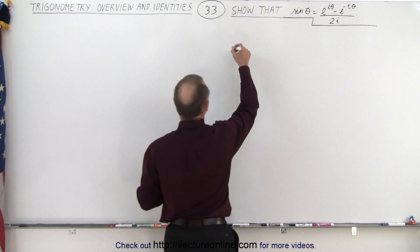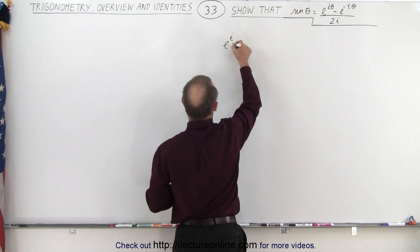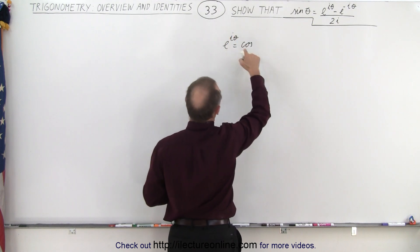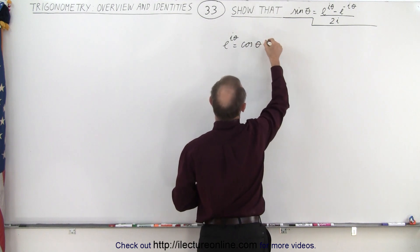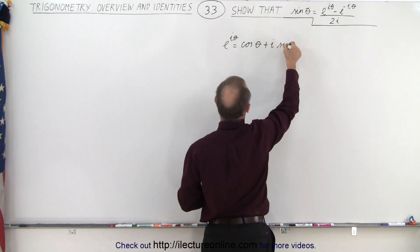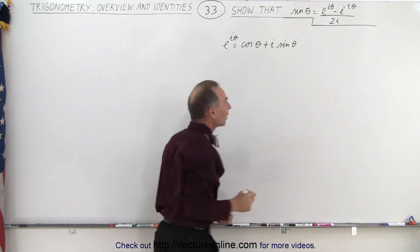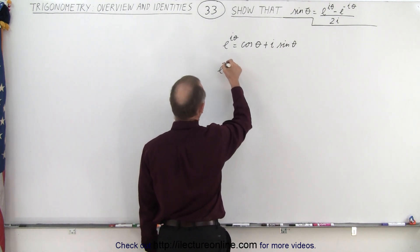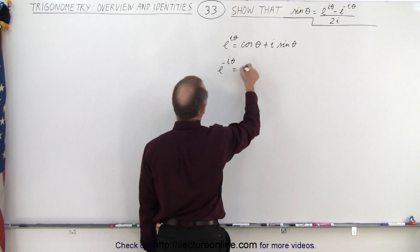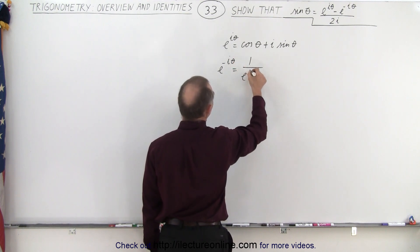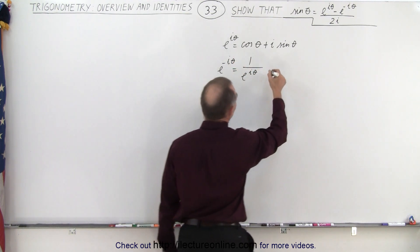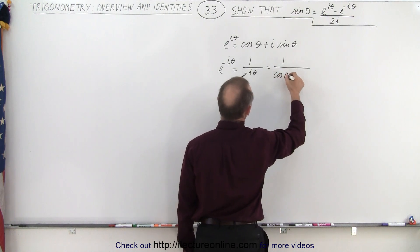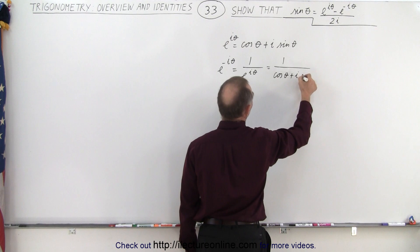We learned that e to the i theta is equal to the cosine of theta plus i times the sine of theta. But what is e to the minus i theta? Well, e to the minus i theta is equal to 1 over e to the i theta, which means that this is equal to 1 over the cosine of theta plus i times the sine of theta.